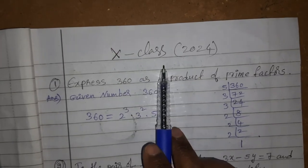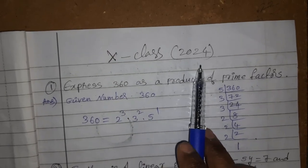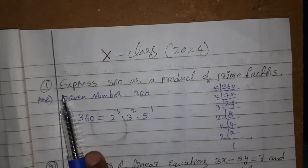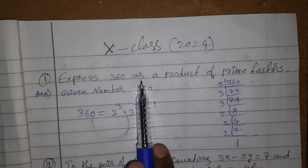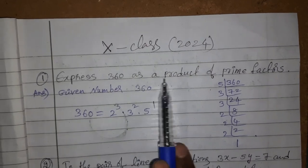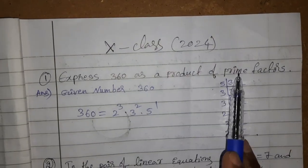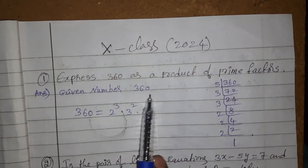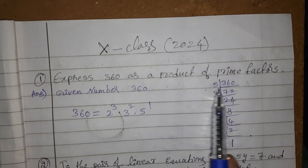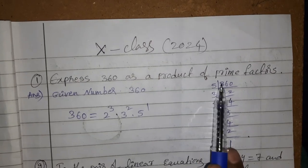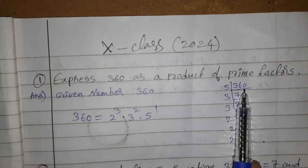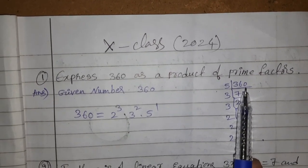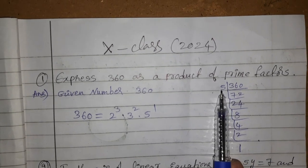10th class mass board exam key paper, first question: express 360 as a product of prime factors. The given number is 360. We have to do prime factorization. Since the unit digit is 0, we begin dividing.